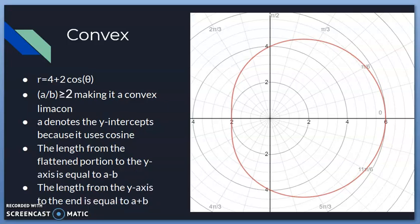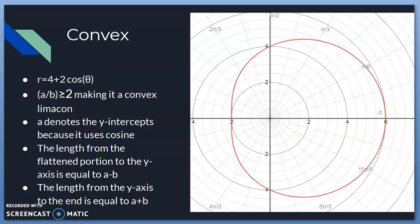For a convex limaçon, r = 4 + 2·cosθ: 4/2 = 2, which satisfies a/b ≥ 2. Since cosine is used, a denotes the y-intercepts (sine would denote x-intercepts). The length from the flattened portion to the y-axis is a − b = 2, and the length from the y-axis to the far end is a + b = 6.